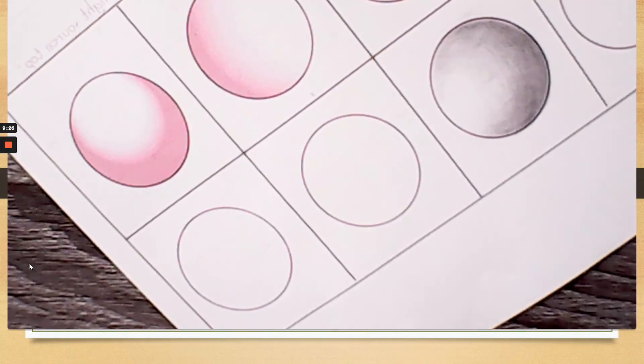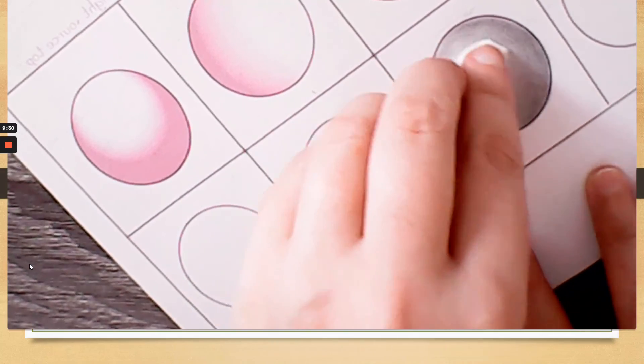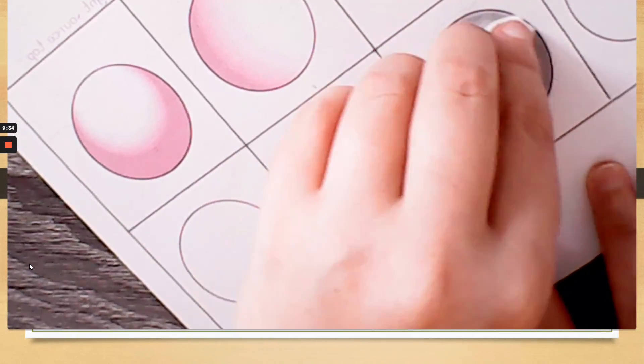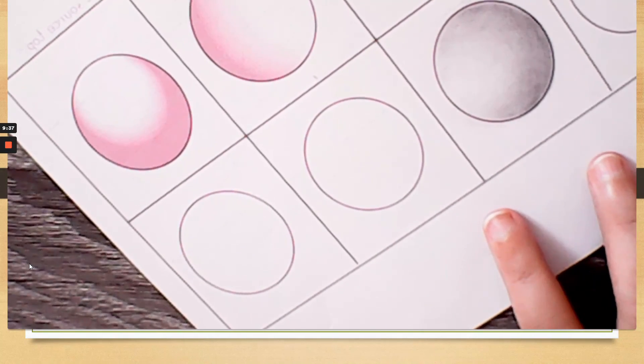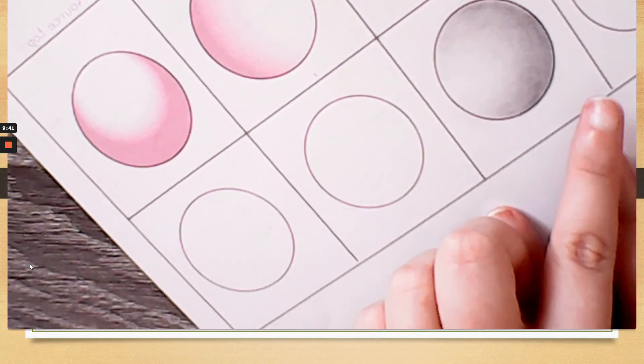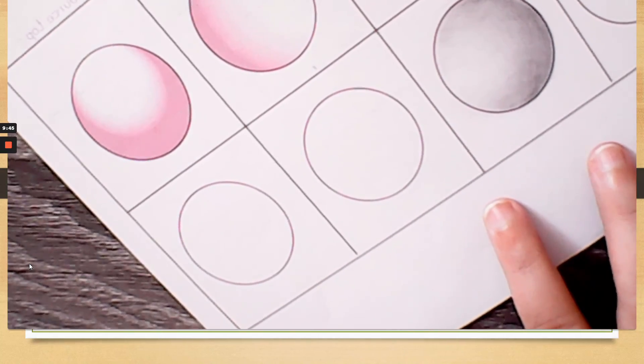Again, it still works the same if you're using the tissue. Just need a small part. And we have a nice shaded sphere going from dark to light.